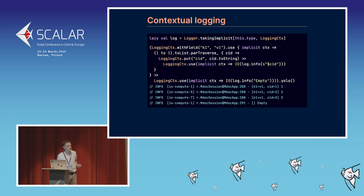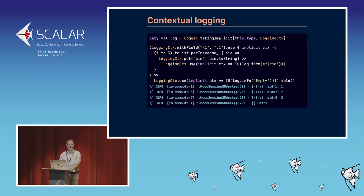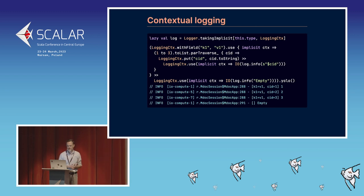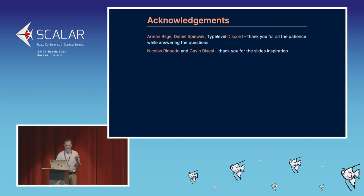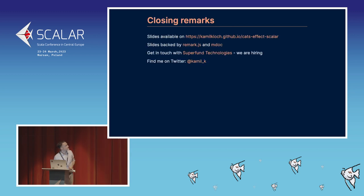That wraps the talk. The key takeaways are: understand supervisor, dispatcher, and IOLocal — what they are and how you can use them — and have a reference point for all the possible flavors. Slides are available on GitHub. Thank you.